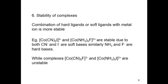Another application is predicting the stability of complexes. Complexes are more stable if all the ligands attached to the central metal atom have the same nature. For example, [Co(CN)₅I]³⁻ and [Co(NH₃)₅F]²⁺ are stable because in the first, CN⁻ and I⁻ are both soft bases, and in the second, NH₃ and F⁻ are both hard bases. However, if the ligands are exchanged — [Co(CN)₅F]³⁻ and [Co(NH₃)₅I]²⁺ — the complexes are unstable because cyanide (soft) and fluoride (hard), or ammonia (hard) and iodide (soft), are mixed.